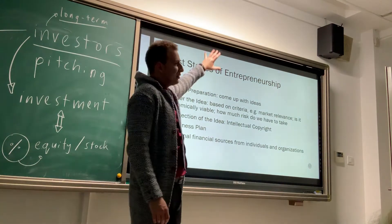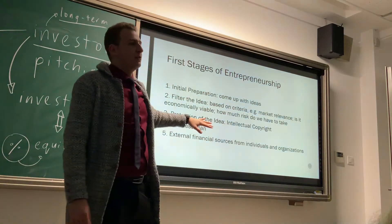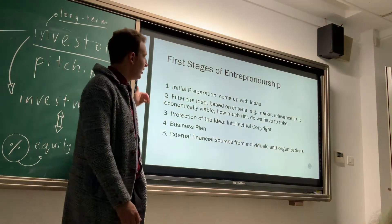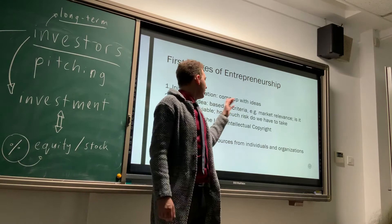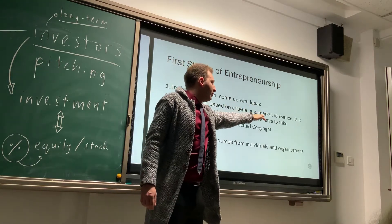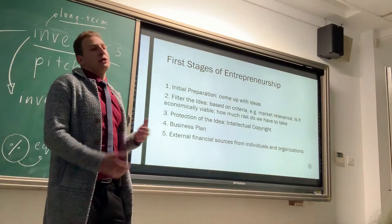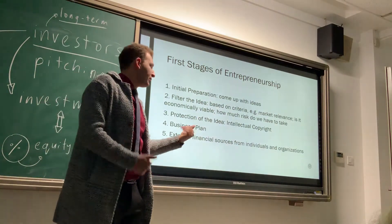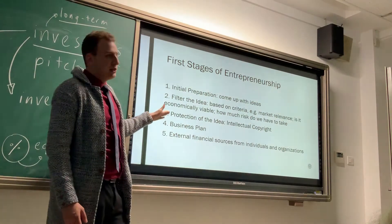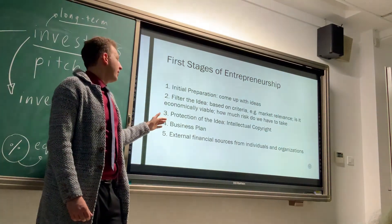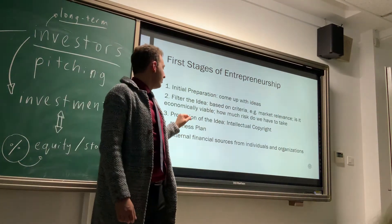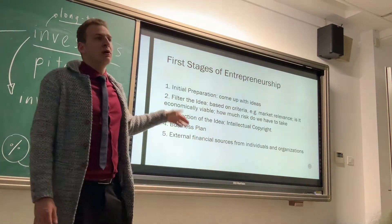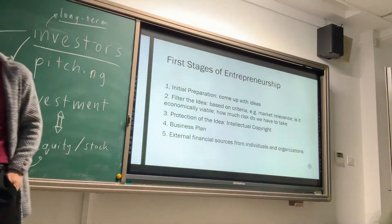Where does the business plan come in the process of entrepreneurship? First you start with the initial preparation — you come up with ideas, you filter the ideas: which are relevant to the market, which are economically viable, meaning you can produce cheaply and sell at a good margin. Can you get protection of that idea — intellectual copyright? And then you get to make a business plan, and after that you look for funding. So the business plan comes before looking for funding or reaching out to investors.